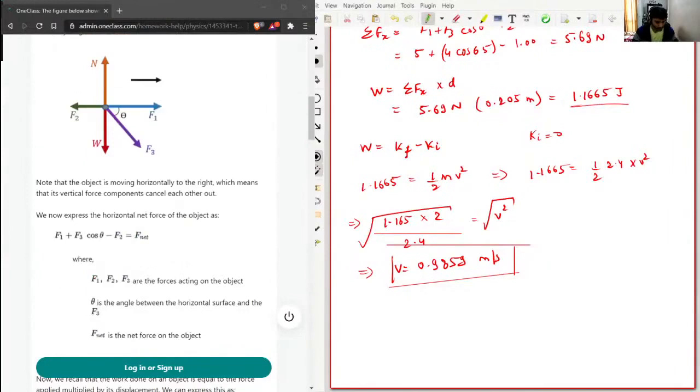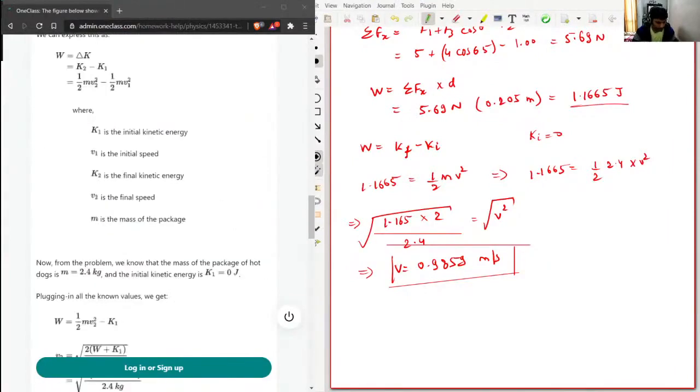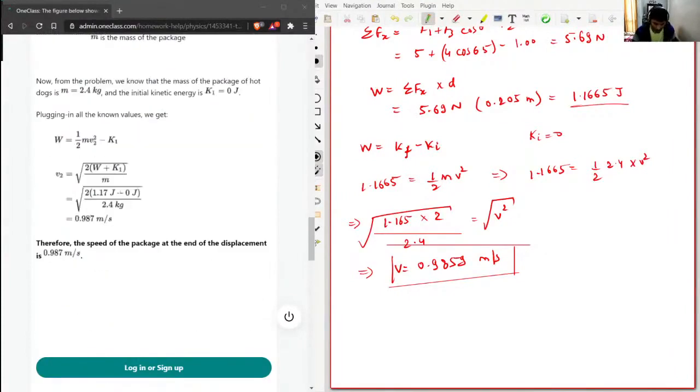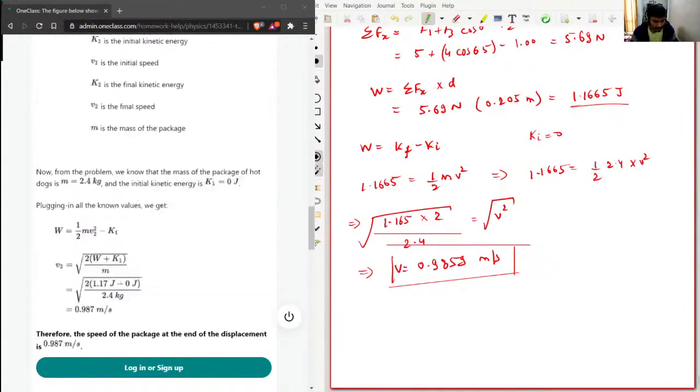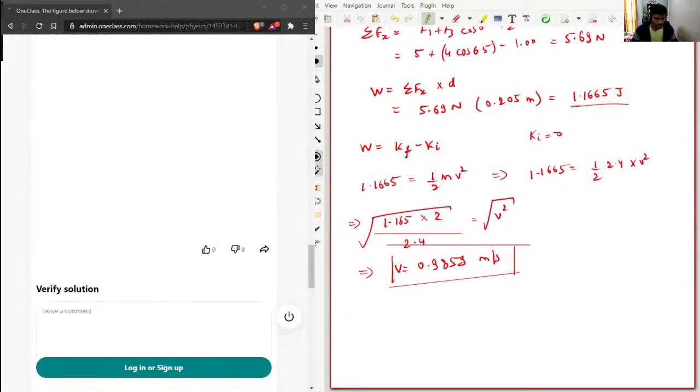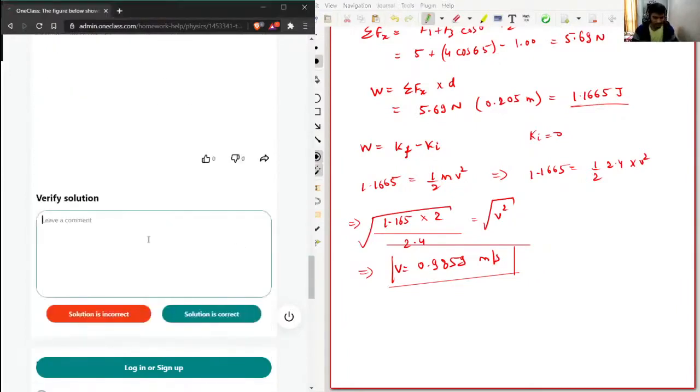And let's check the solution also given here. So K2 minus K1, final minus initial, and then they have got 0.987. So we have got 0.9859 because we took the value, the work done as 1.1665, and they took the work done as 1.17. So this much of error is acceptable and the solution given here is correct.